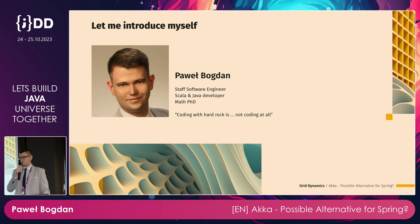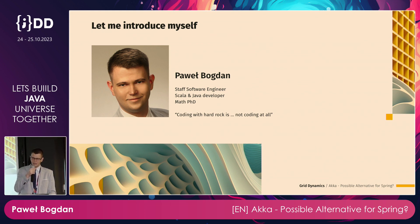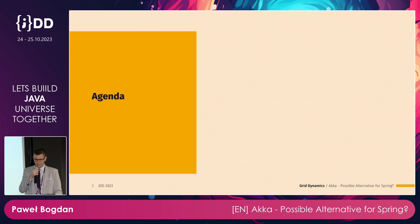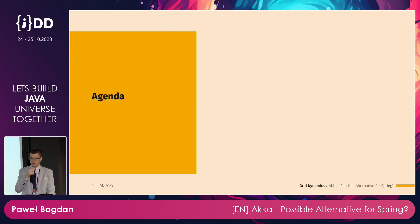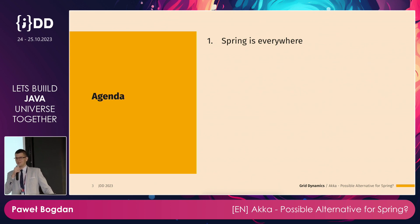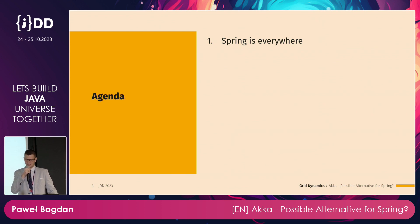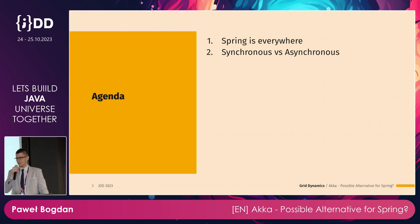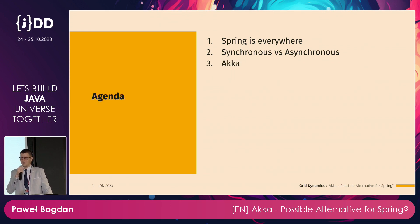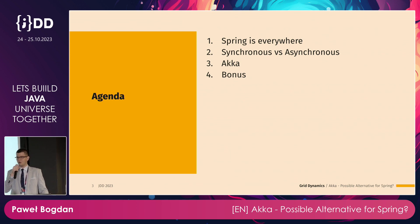Today I would like to talk about ACCA, because as you probably know, ACCA is a framework for Scala, written in Scala. However, it's possible to develop Java applications using ACCA, and that's basically the main topic of my presentation. But before I reach that point, I would like to talk about Spring, discuss synchronous and asynchronous ways of communication between services, and then start talking about ACCA. After that, I have prepared some bonus surprise — I hope you will like it.